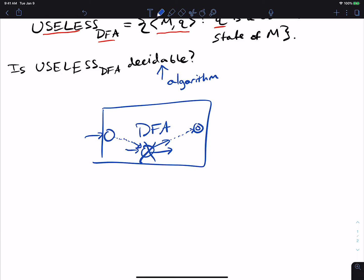One result that you should recall is that EQ_DFA is decidable. Remember, EQ_DFA is: we're going to give it two DFAs, and it will tell us whether or not they have the same language. It answers whether L(M1) equals L(M2).